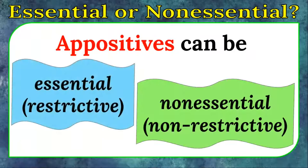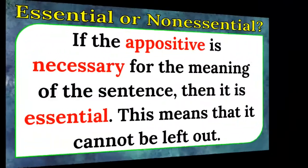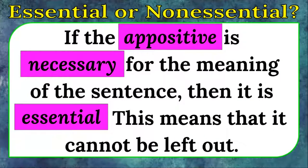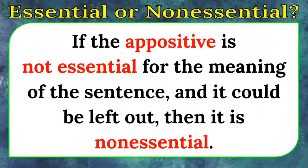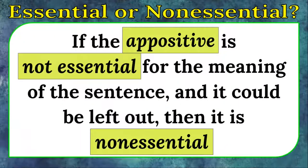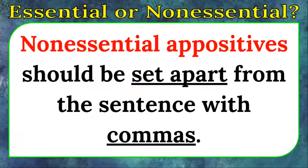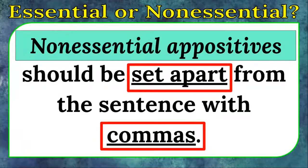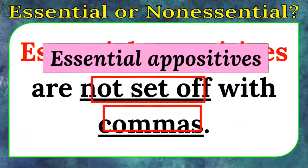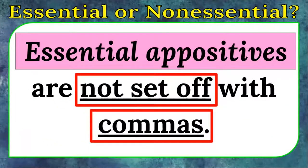Appositives can be essential (or restrictive) or non-essential (or non-restrictive). If the appositive is necessary for the meaning of the sentence, then it is essential — this means it cannot be left out. If the appositive is not essential for the meaning of the sentence and it could be left out, then it is non-essential. Non-essential appositives should be set apart from the sentence with commas. Essential appositives are not set off with commas.